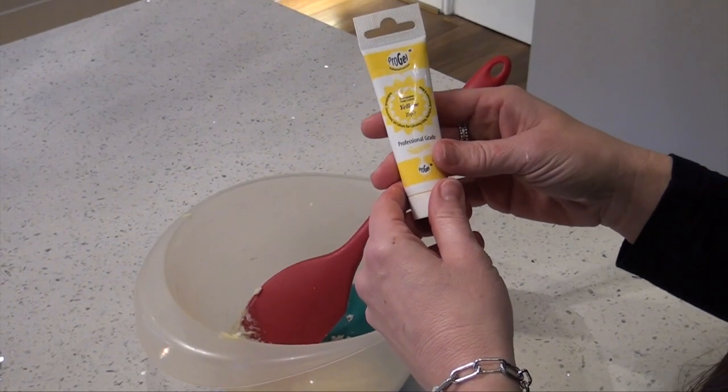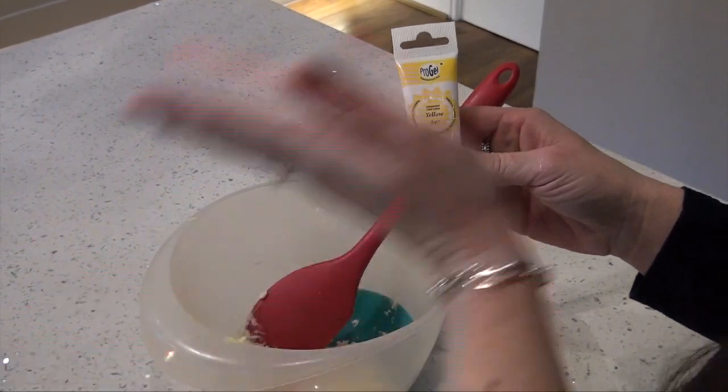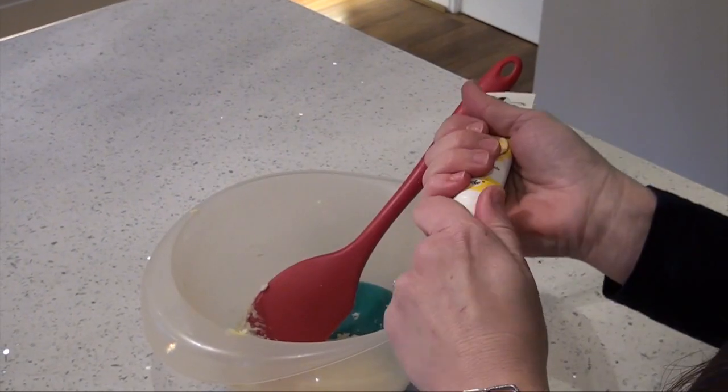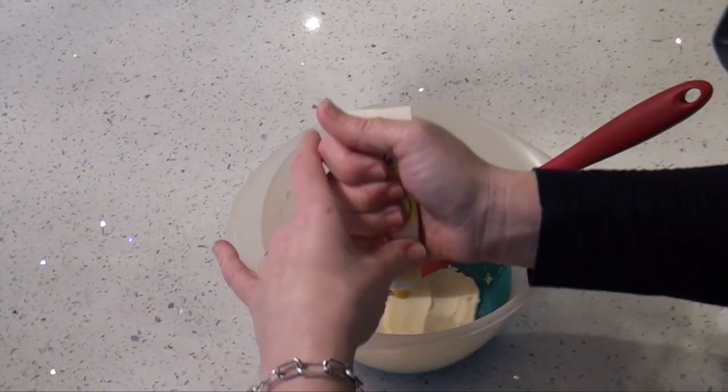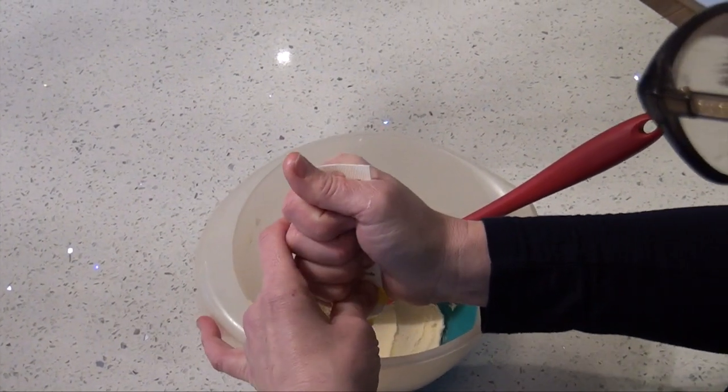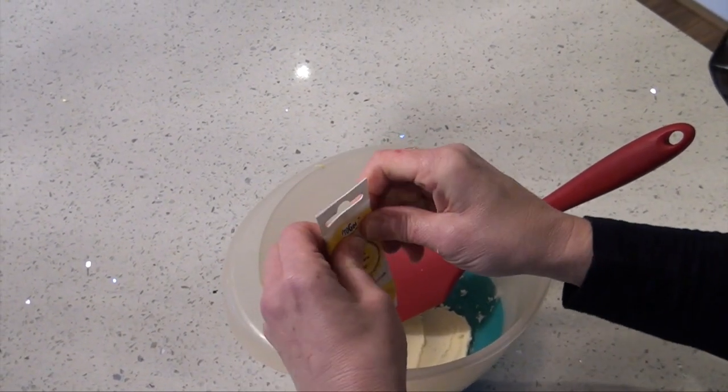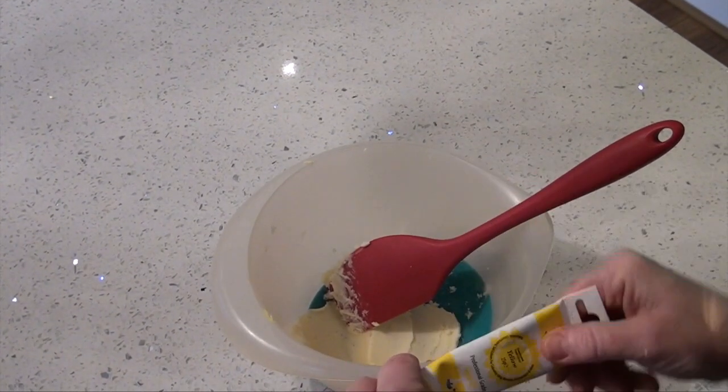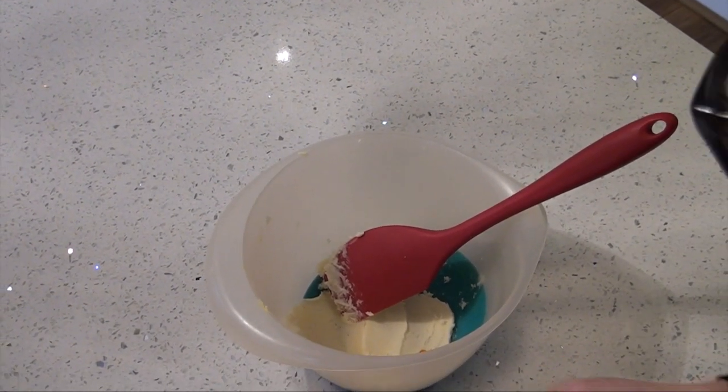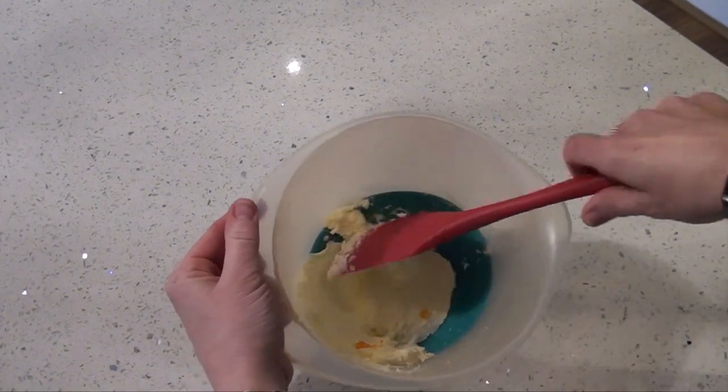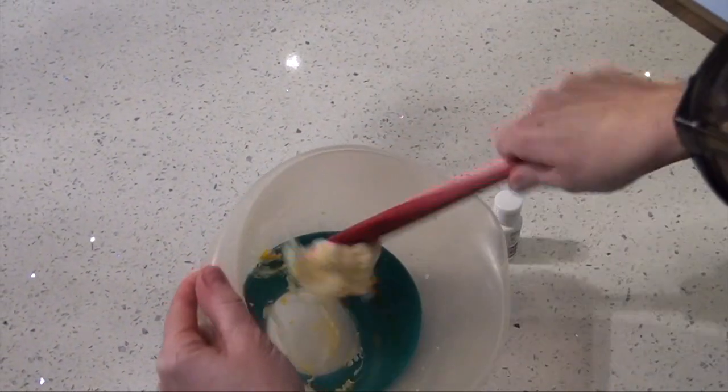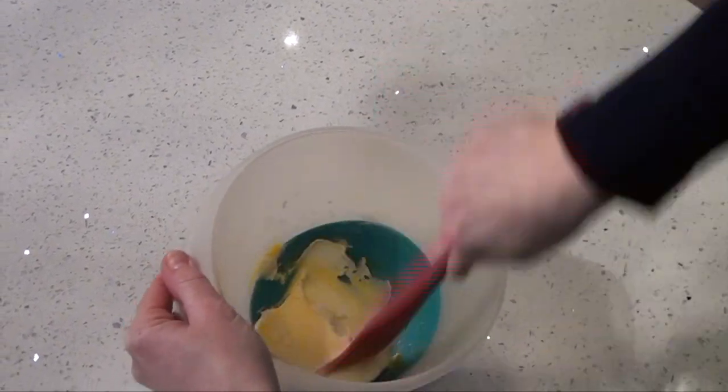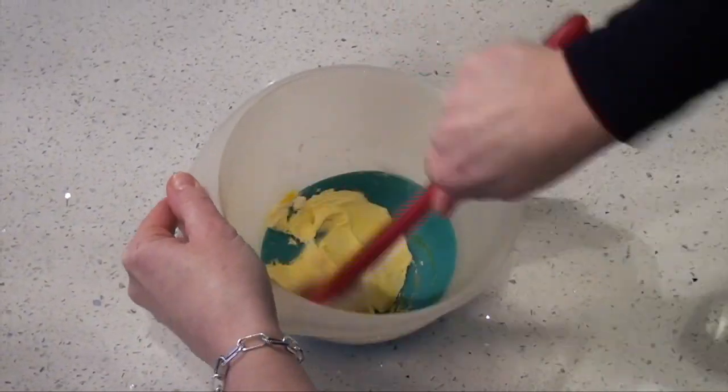Pro gel yellow. This will make you a lovely lemon shade right up to a bright luminous yellow. So again, always start with the smallest amount first, especially if you don't want it really dark. Now a smaller amount I've got in there, it's literally two tiny drips. Gorgeous yellow.